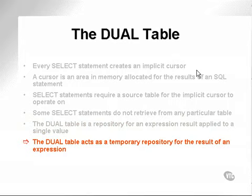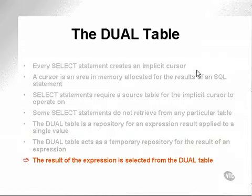The dual table acts as a temporary repository for the result of an expression, a single expression, or a cursor, the area of memory where the results of a table select are placed. The result of that expression is selected from the dual table. So quite simply put, the dual table is really a dummy object placed between input and output in order to cater for the way that SQL works.